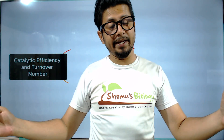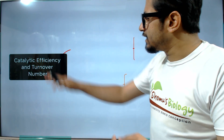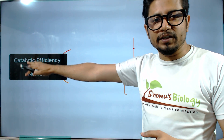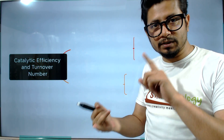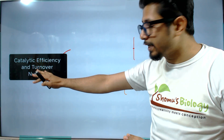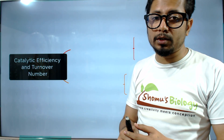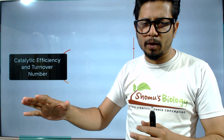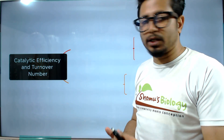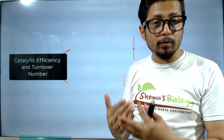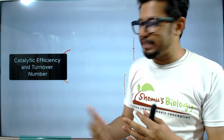Hello everyone. Today's topic is catalytic efficiency and turnover number of enzymes. This is from biochemistry — these two properties of enzymes are very important for mathematical and analytical problems. We'll cover what catalytic efficiency and turnover number are, their formulas, their significance, and what they mean.